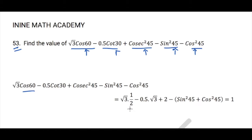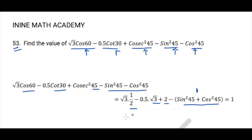cos60 = 1/2, cot30 = √3, csc45 = √2. For sin²45 and cos²45, we can simplify: −(sin²45 + cos²45) = −1. So we get √3/2 − √3/2 + 2 − 1, and the √3/2 terms cancel out to give 1.